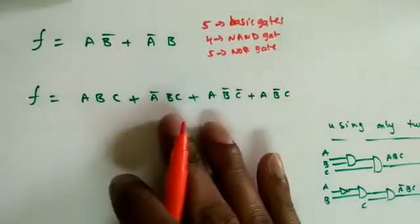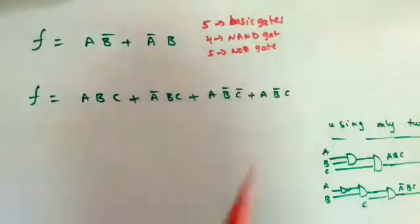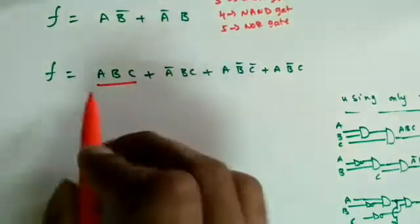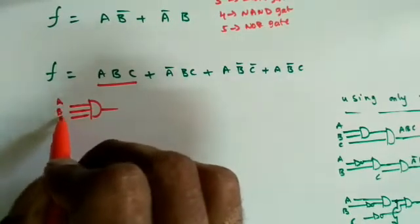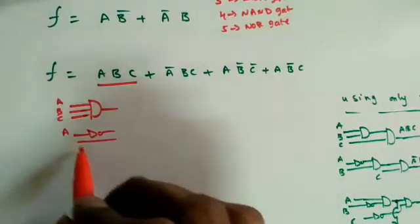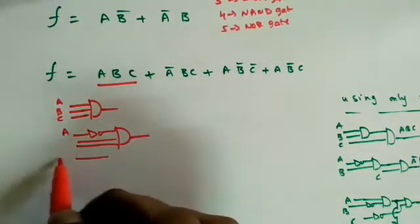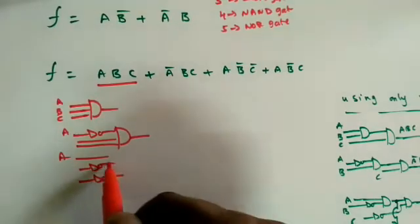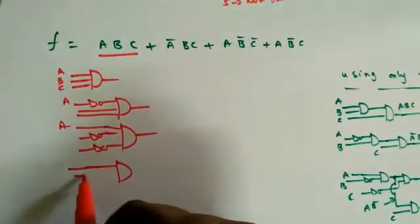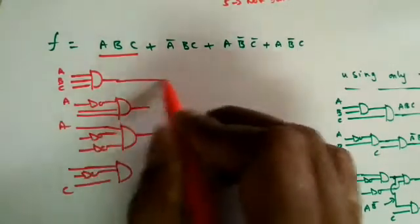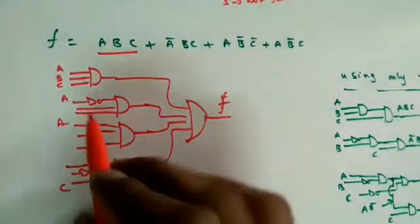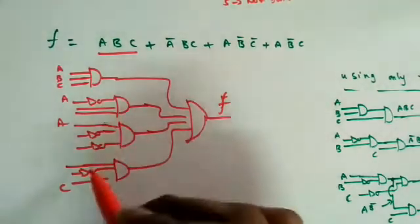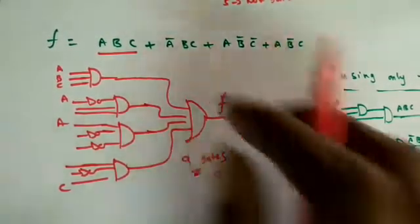Now take a three-variable function. Without any minimization technique, the expression has four AND gates and four NOT gates — that's eight gates plus one OR gate, totaling nine gates required to implement this function.